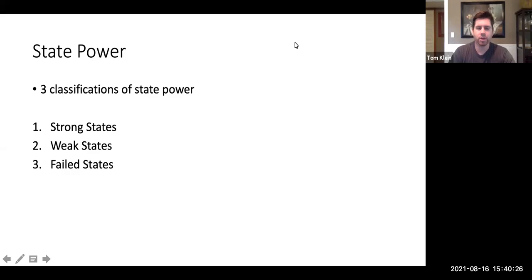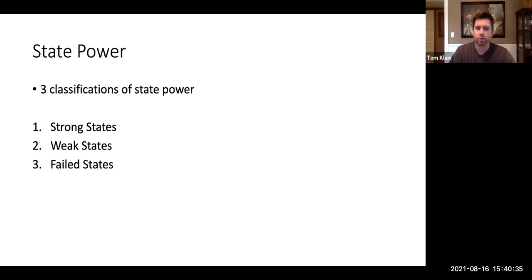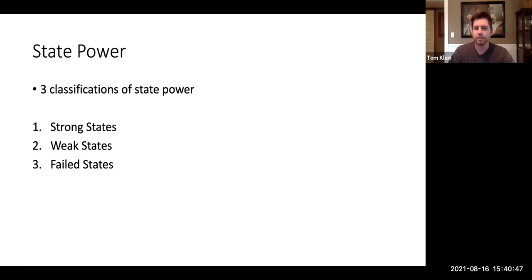Hi class. Welcome to Lecture 2, Part B. In Lecture 2, Part A, we discussed what states are, what makes states sovereign, and how they control their territory. In Part B, which will be the final part of Lecture 2, we're going to discuss three different types of classifications of states: strong states, weak states, and failed states. Let's go over those in more detail.